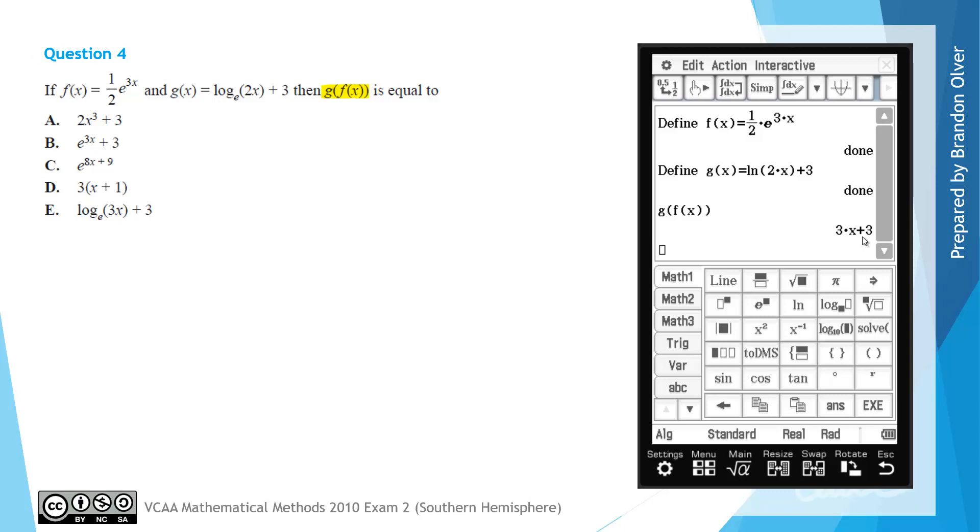So from the calculator, the answer that it gave was 3x plus 3, which if we factor the 3 out, we just get 3 times the quantity x plus 1, which is option D.